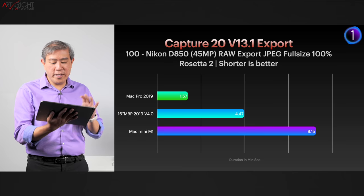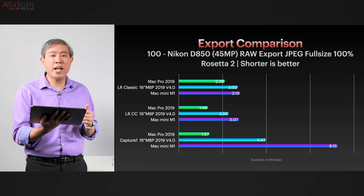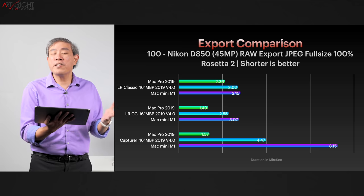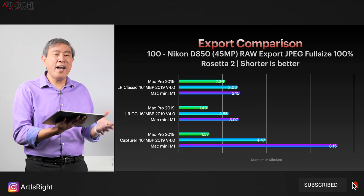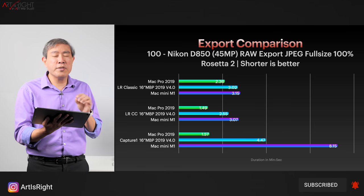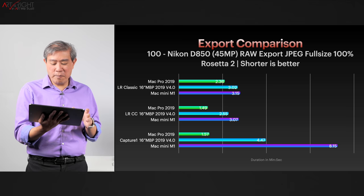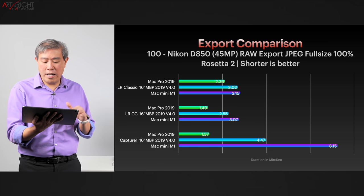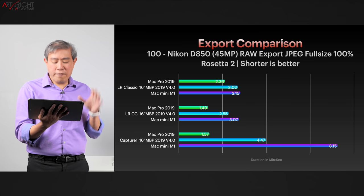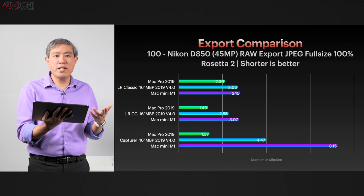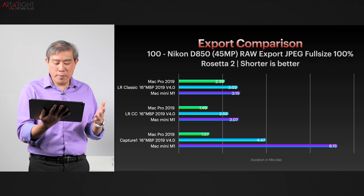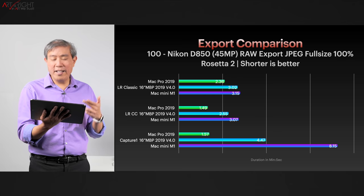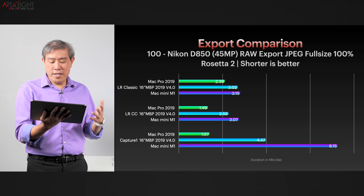Here's an export comparison chart across three programs — Lightroom Classic, Lightroom CC, and Capture One. The Mac Mini M1 is nudging close to the Intel counterparts, costing anywhere from half to one-eighth the price of a Mac Pro, with much lower power consumption. The fastest export program right now is Lightroom CC. Lightroom Classic and Capture One are still running on Rosetta, yet we're not seeing a huge improvement in Lightroom CC's export time from going native. On Capture One specifically, the Mac Mini M1 takes almost double the time of the MacBook Pro for exporting.